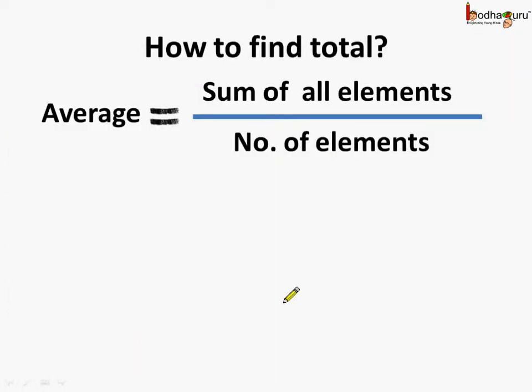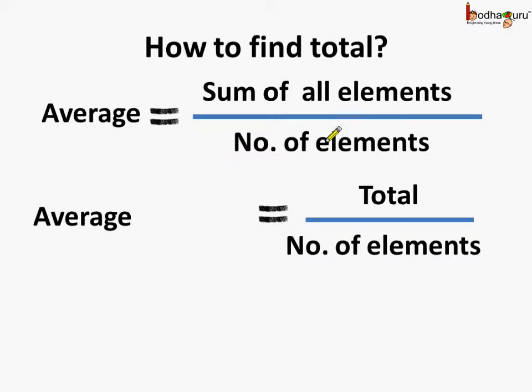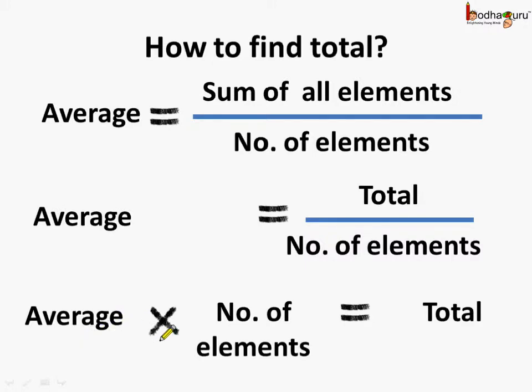Now how to find the total? We know average equals sum of all the elements divided by number of elements. Now if we replace sum of all elements by total, then we write it as average equals total by number of elements. Now if we move number of elements to the left side, then this denominator gets multiplied by the average. So average multiplied by number of elements equals total.